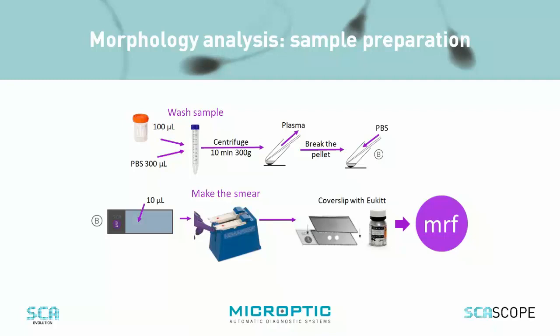A simple centrifugation will allow removal of the plasma and then cleaning all samples with PBS. Once our sample is washed we can proceed with smearing the sample. We will use pre-stained slides that allow fixation and staining of the cells in just one step by doing the smear. Then we will mount it with mounting kit and a cover slip.